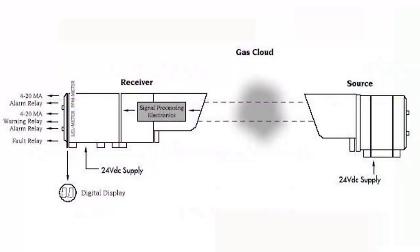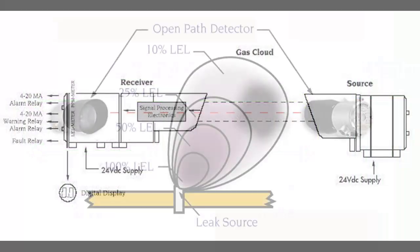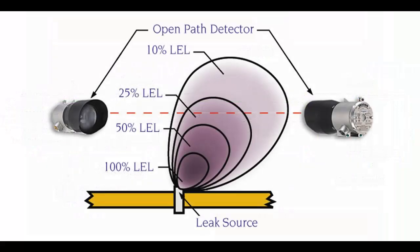The transmitter sends a continuous or pulsed light beam towards the receiver. As the light travels through the atmosphere, any target gas present in the path absorbs light at specific wavelengths. The receiver captures the transmitted light and measures its intensity. The reduction in light intensity at specific wavelengths indicates the presence and concentration of the target gas.